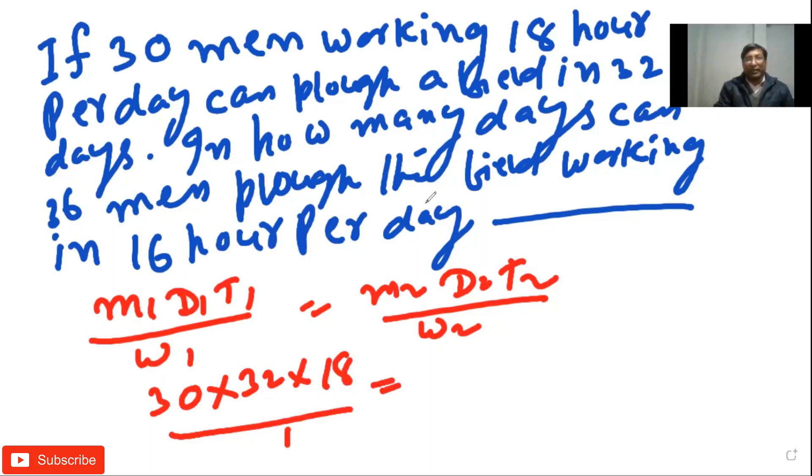Again, in the second case we have 36 men, that's 36. Time is 16 hours, that's 16 hours. Days is not given. Now solve this.